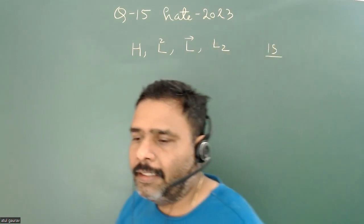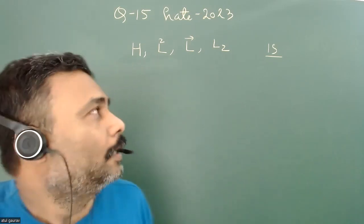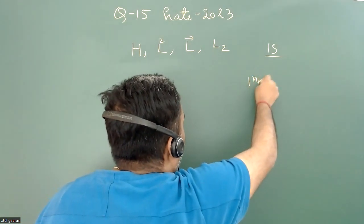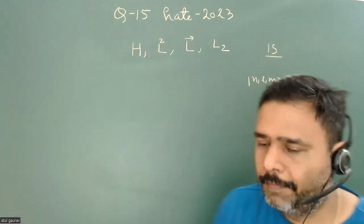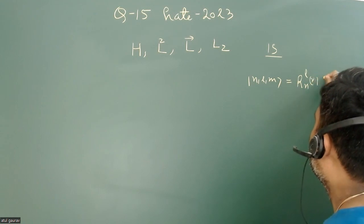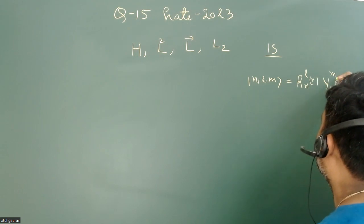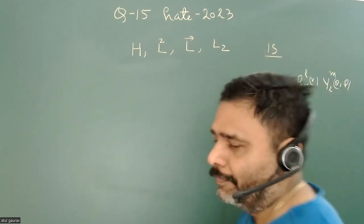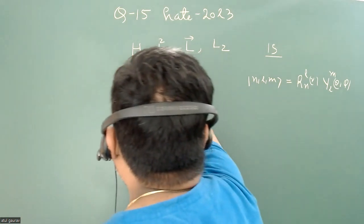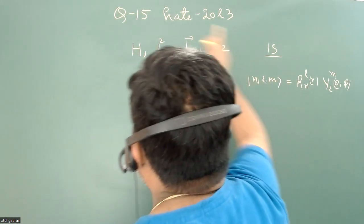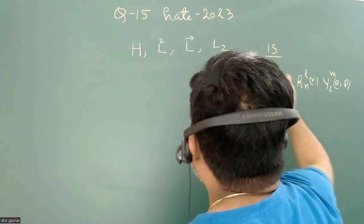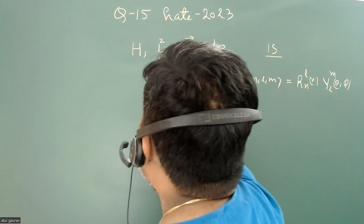Before going to 1s specifically, let's discuss this problem in a holistic manner. If we have any general state |nlm⟩, that means we have a radial wave function R_nl(r) and spherical harmonics Y_l^m(θ,φ) — I'm talking about general l, not specific values. Then obviously this state will be an eigenstate of H, an eigenstate of L², and an eigenstate of Lz.